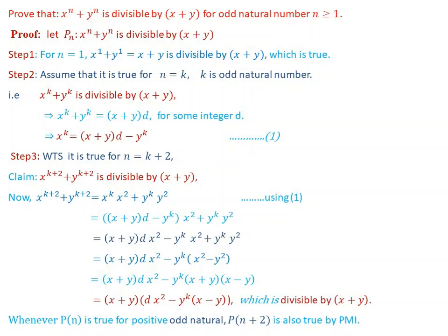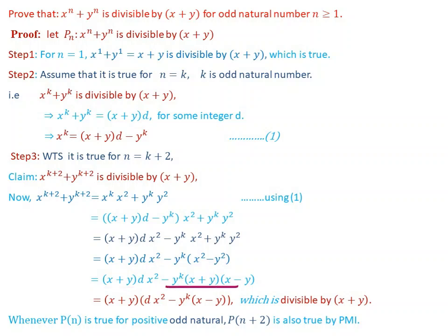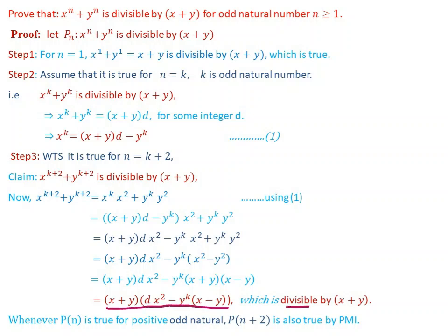Grouping y to the power of k terms: x plus y times d times x squared minus y to the power of k times x squared minus y squared. Now x squared minus y squared equals x plus y times x minus y. So the expression becomes x plus y times d times x squared minus y to the power of k times x plus y times x minus y. Taking x plus y as a common factor: x plus y times the quantity d times x squared minus y to the power of k times x minus y, which is divisible by x plus y.